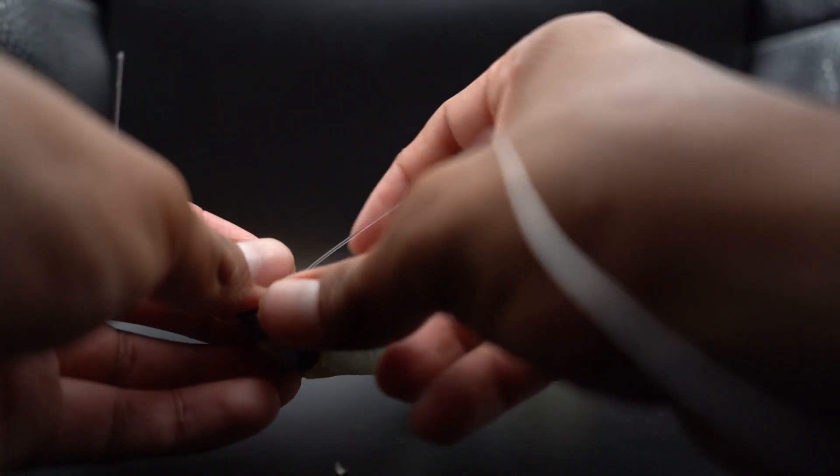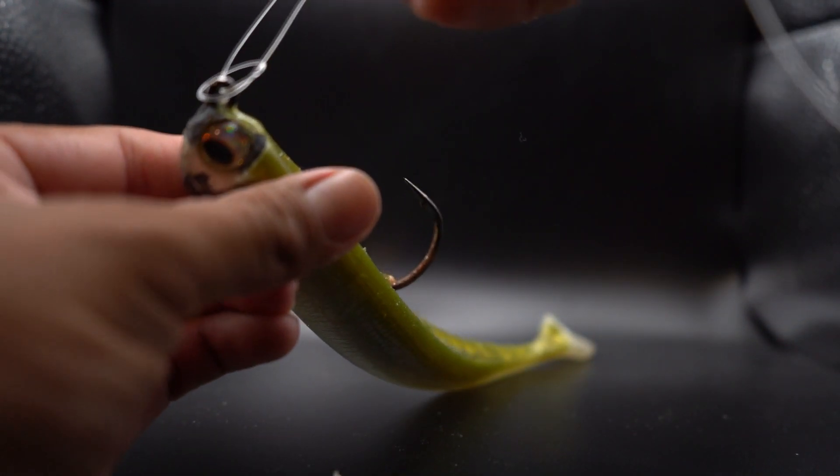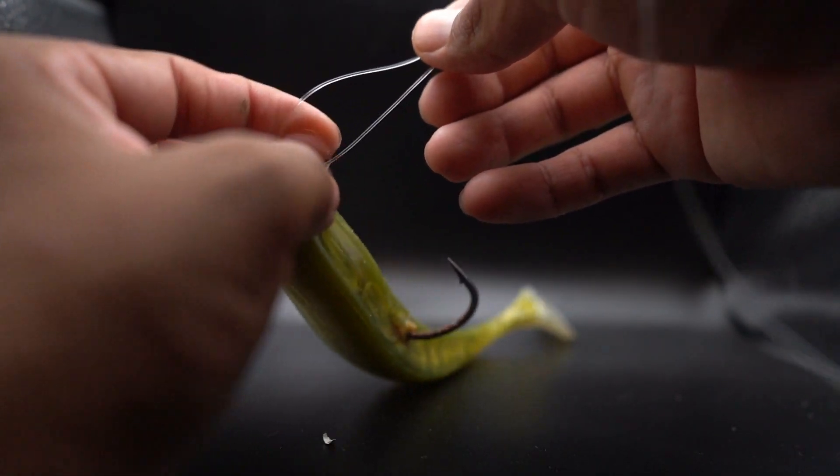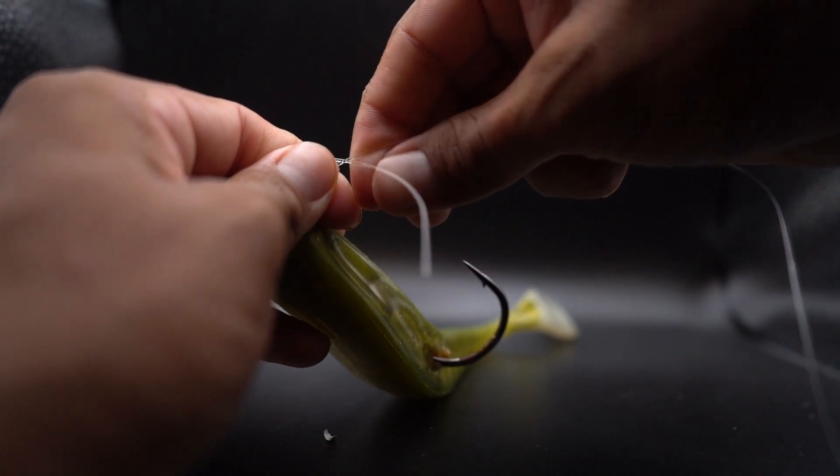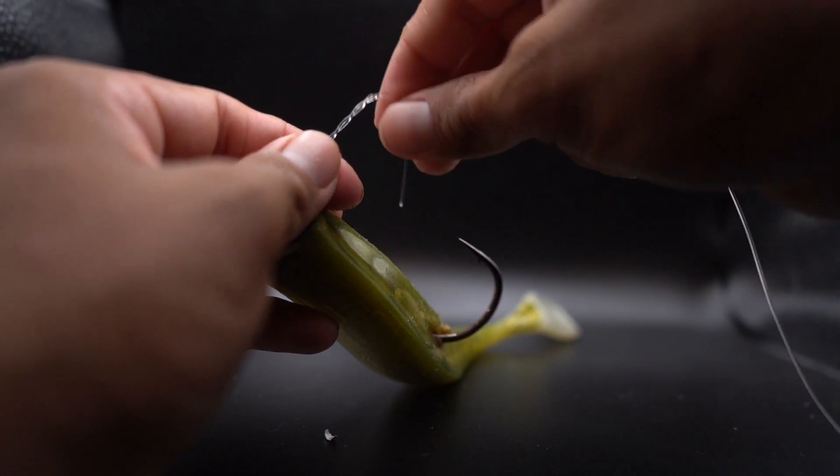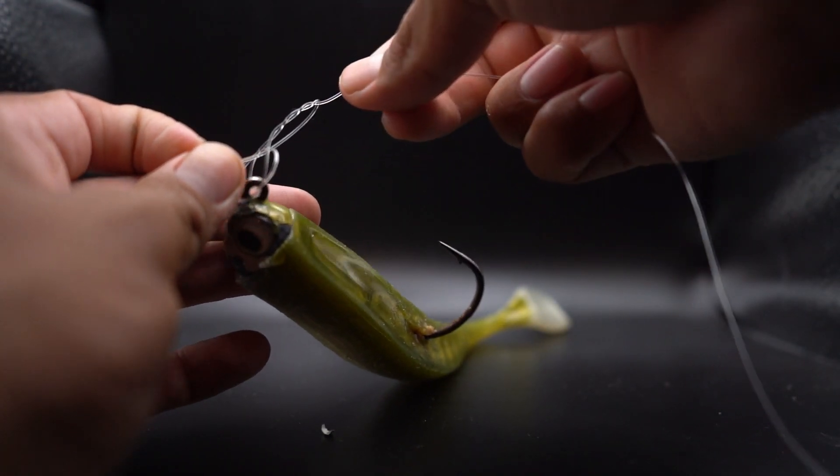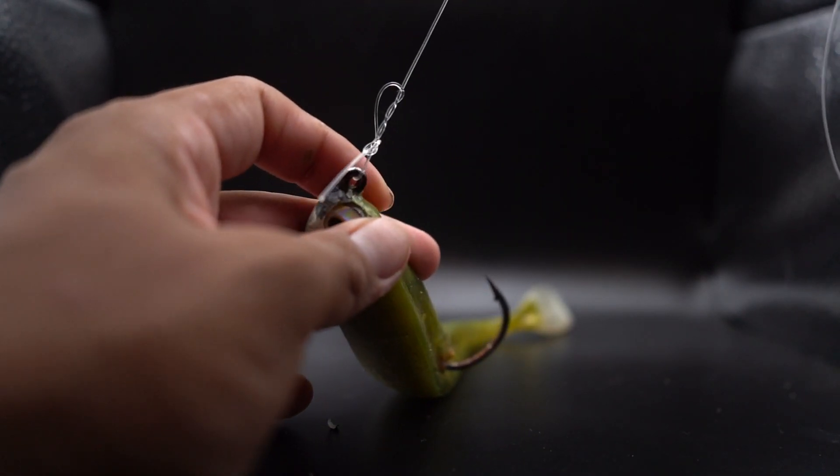Wait, let me show you guys - after you have that completed, that's how it should look. Then I usually do like roughly three twists, so one, two, three, and then run that tag end right here, just like that. After that, just cinch it down.